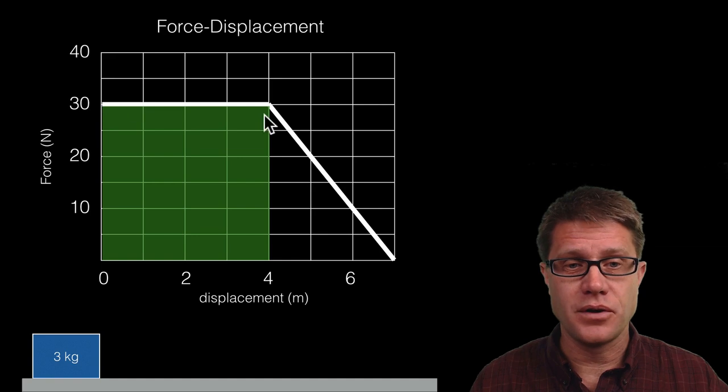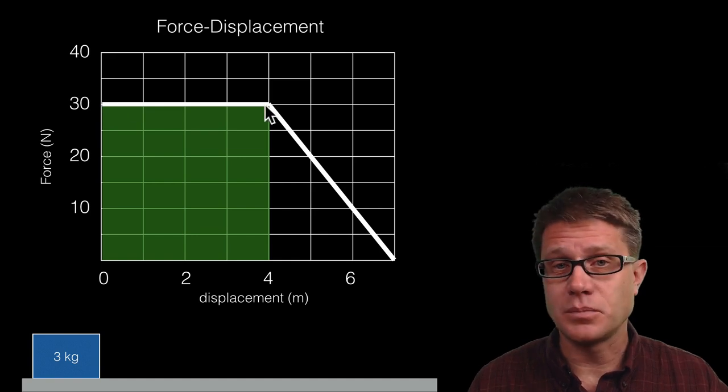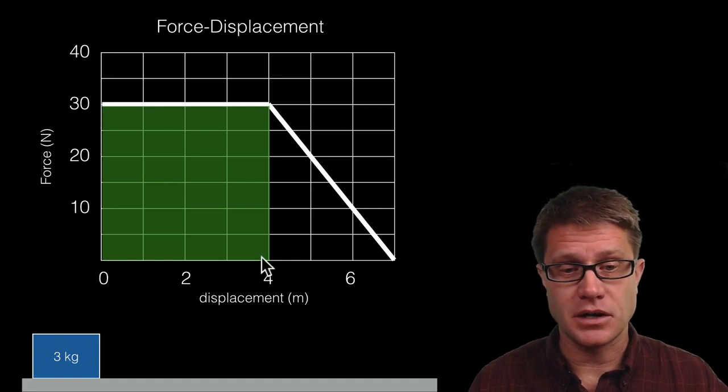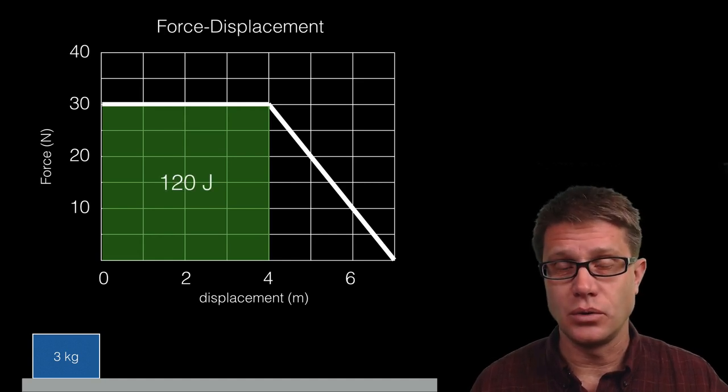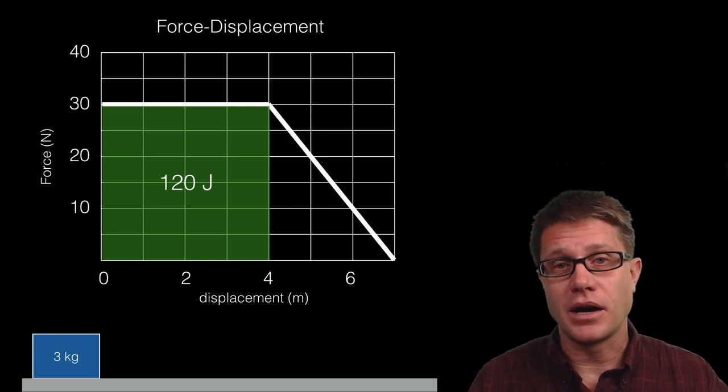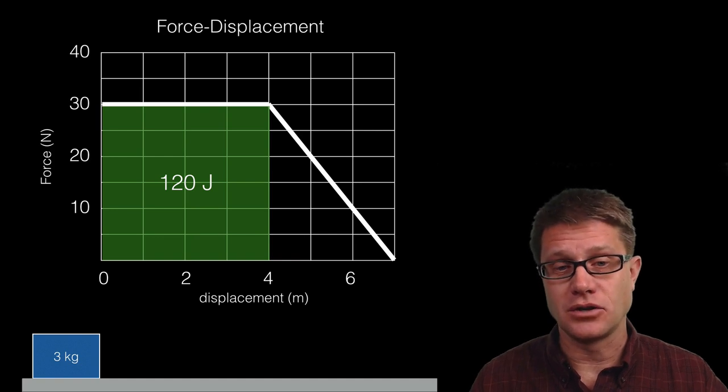You just figure out the area of this block right here. So it's a force of 30 newtons. What's our displacement? We would read that across the bottom. It's going to be 4 meters. So the amount of work that we're doing is going to be 120 joules. It's just base times height. That's how much energy that block would have at the end. What kind of energy is it going to be? It's going to be kinetic energy.